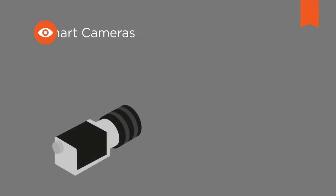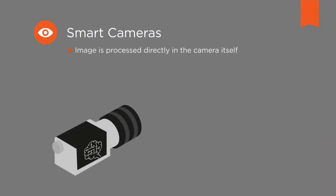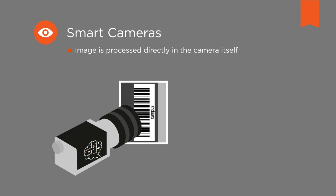The path of the image from the camera to the processing computer as we have described it can vary depending on the vision system. In smart cameras, for example, the image is processed directly in the camera itself. A smart camera for barcode recognition only passes the decoded value of the barcode to the connected processing unit instead of the image with a barcode.